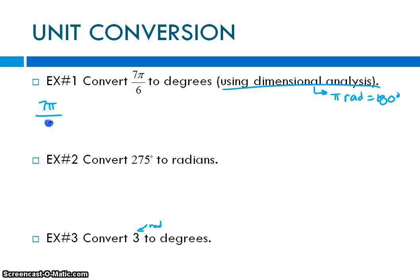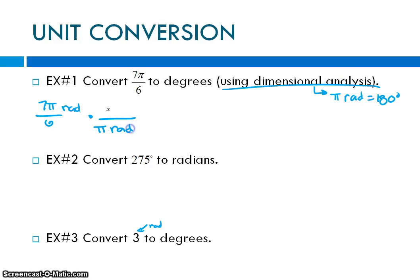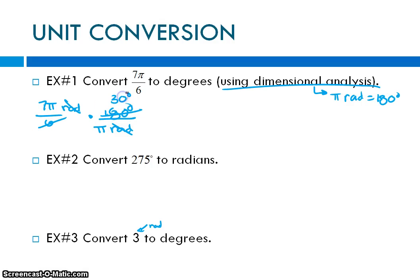We're going to convert 7π/6 radians to degrees. I have 7π/6 radians, and I multiply by the conversion fraction. Because I have radians in the numerator, I put radians in the denominator: π radians equals 180 degrees. The radians cancel. Then 6 goes into 180 thirty times, and 30 times 7 is 210. The π cancels with π. So 7π/6 is equivalent to 210 degrees.